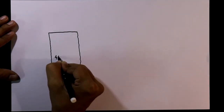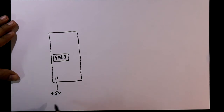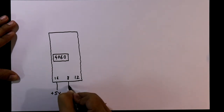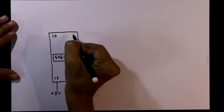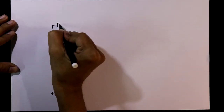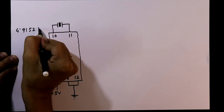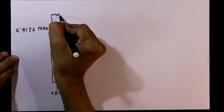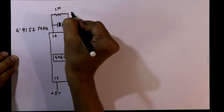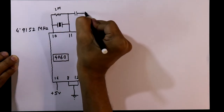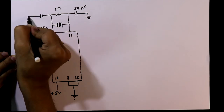Now let's look at the circuit diagram. For IC 4060, pin number 16 is connected to plus 5 volt, and pin numbers 8 and 12 are connected to ground. Between pin numbers 10 and 11 we connect the 4.9152 megahertz crystal. Also between these two pins we connect one resistor of 1 mega ohm, and with this pin we connect one capacitor of 20 picofarad to ground.